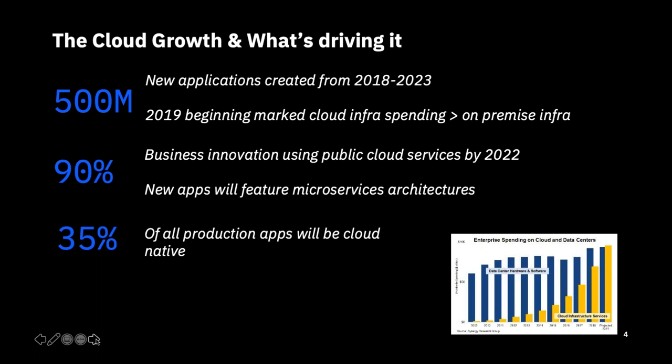Of course, there has been 25 to 30 years of investment in the on-premise space, so there's quite a bit of infrastructure still lying around in spite of spending being equal currently. So what is driving this growth? Why is hardware infrastructure spending going down, and why is cloud infrastructure spending going up?